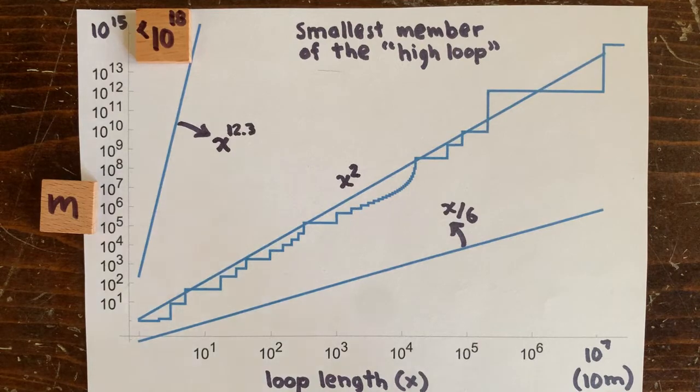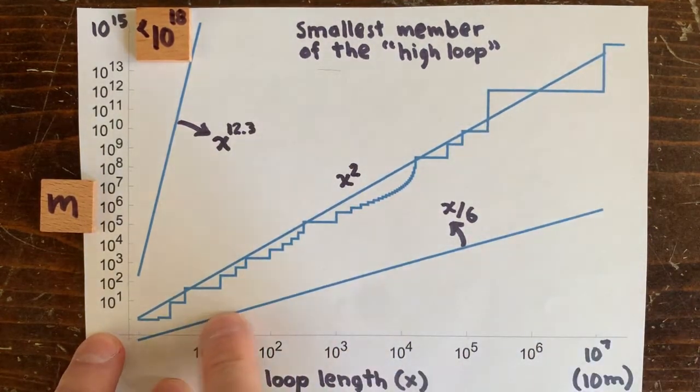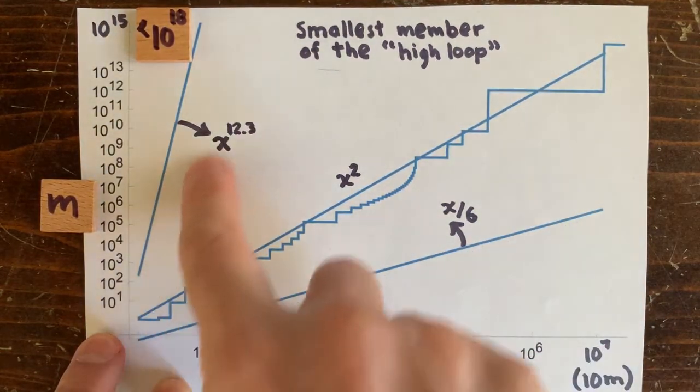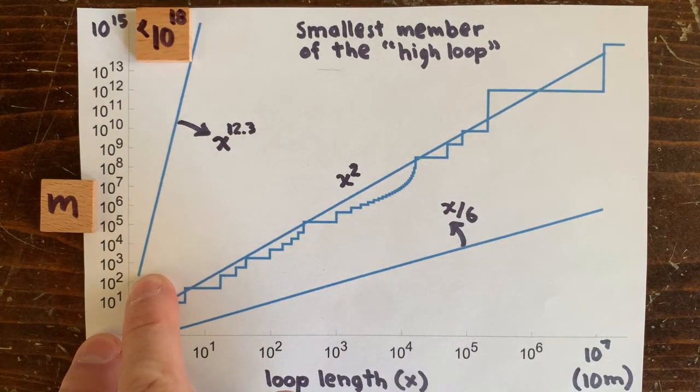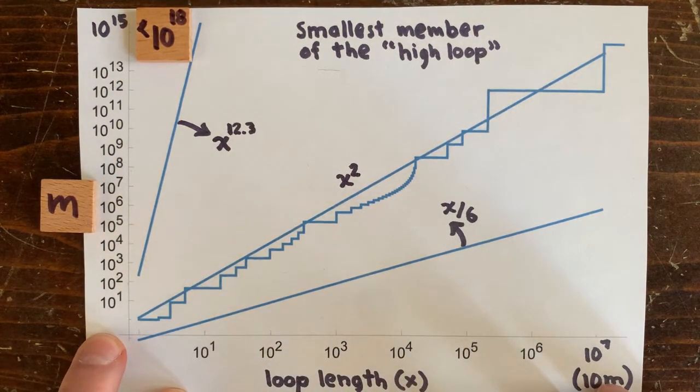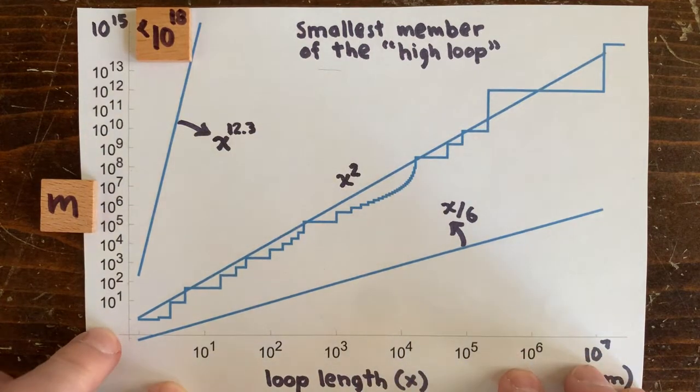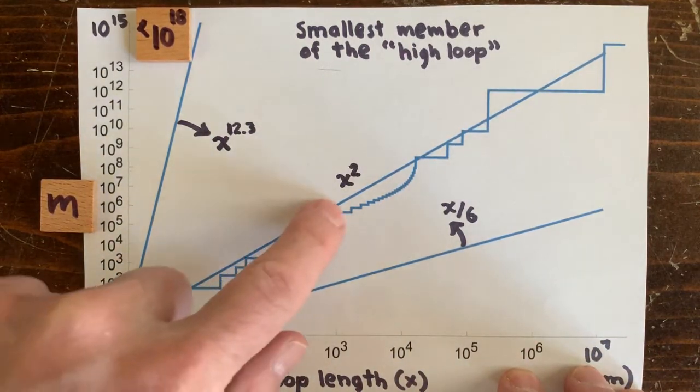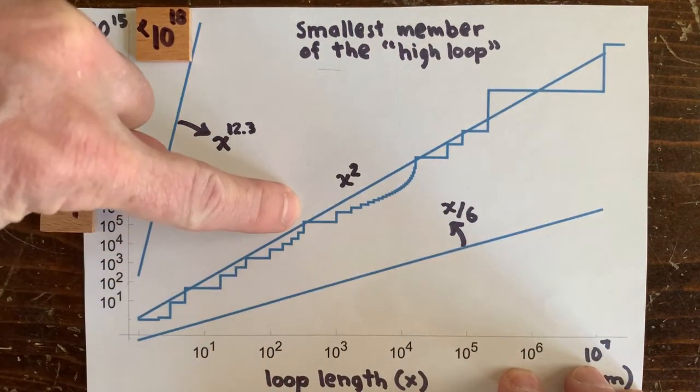So m has to be bigger than this, and m has to be smaller than this. And also, thanks to a theorem by Dirichlet, we know that m is going to be higher than this line an infinite number of times. It's already happening a few times here.